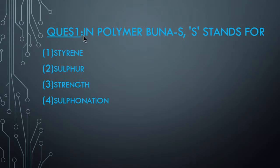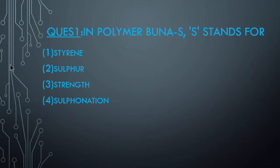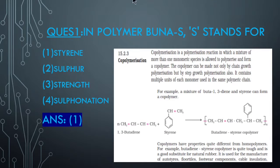Now we will begin with the first question. Question 1: In polymer Buna S, S stands for? The answer is styrene. So it is from co-polymerization, which we have seen previously.